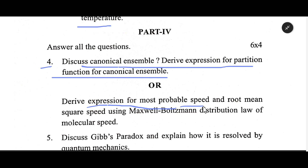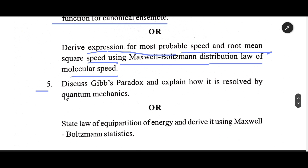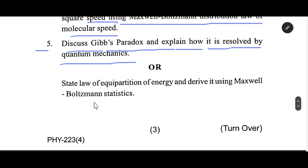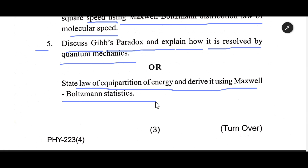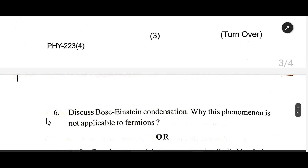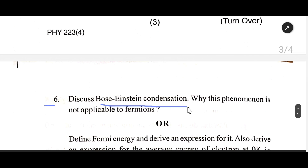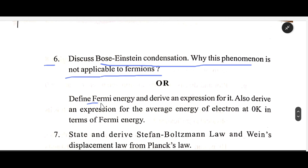Number Four: Discuss the canonical ensemble and derive expressions for the most probable speed and root mean square speed using Maxwell-Boltzmann distribution law of molecular speeds. Number Five: Discuss Gibb's paradox and explain how it is resolved by quantum mechanics. State the law of equipartition of energy and derive it using Maxwell-Boltzmann statistics.